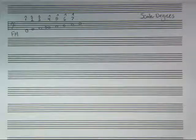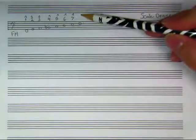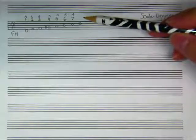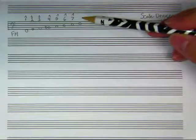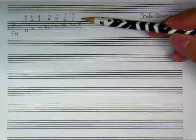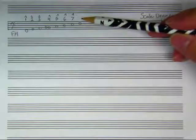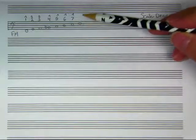You'll notice a couple of things about how I did this. First of all, I wrote it above the staff. So the scale degree label came above the note that I was referring to. That's just kind of a standard practice. It makes it easier to see what you're talking about.